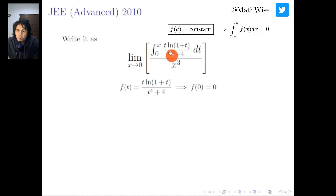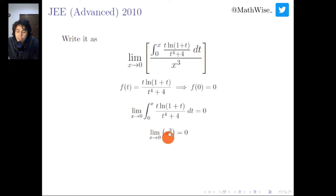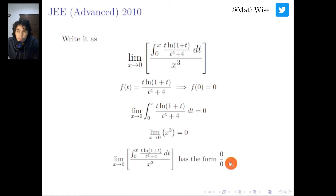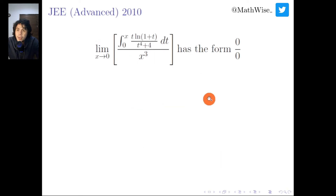Since f(0) = 0, the numerator limit is 0, and the limit of x cubed as x approaches 0 is also 0. So our limit has the form 0 over 0. This suggests we might want to use L'Hôpital's rule, although it is not always successful.